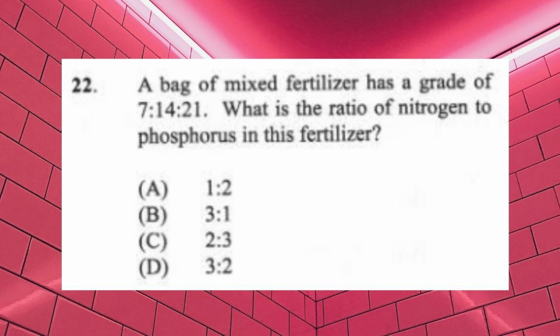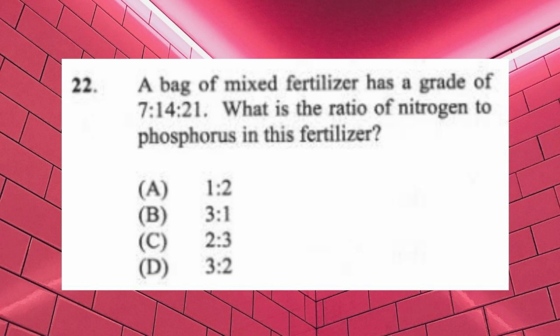Question 22: A bag of mixed fertilizer has a grade of 7-14-21. What is the ratio of nitrogen to phosphorus? The answer is A, one to two. In fertilizer notation, the first number represents nitrogen, the second phosphorus, and the third potassium. To simplify: divide by the smallest number, 7. So 7÷7=1, 14÷7=2, 21÷7=3. The ratio is 1:2:3, and since the question asks only about nitrogen to phosphorus, the answer is 1:2.